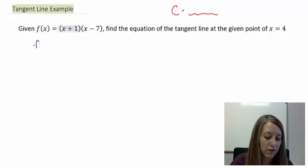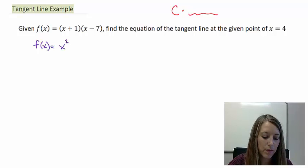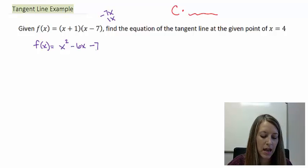All we have to do is FOIL. First, x times x gives me x². Outside gives me -7x. Inside gives me +1x, so together those give me -6x. And last, 1 times -7 gives me -7.